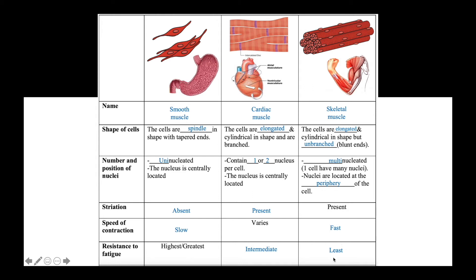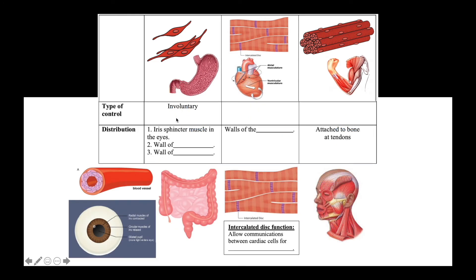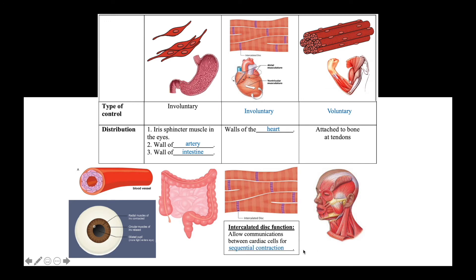Both smooth muscle and cardiac muscle are under involuntary control, meaning their contraction does not require conscious stimulation. However, skeletal muscle is under voluntary control. Smooth muscle can be found in the iris of the eye, the wall of arteries, and the wall of the intestine. Cardiac muscle is found in the wall of the heart. Skeletal muscle is attached to bones and tendons. The cardiac muscle also contains intercalated discs, which allow communication between cardiac cells for sequential contraction of the heart.